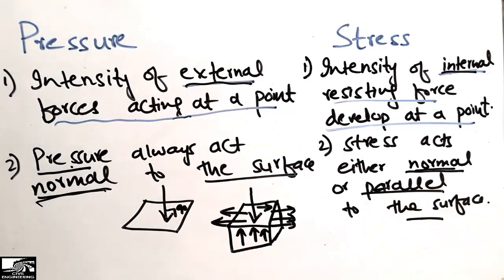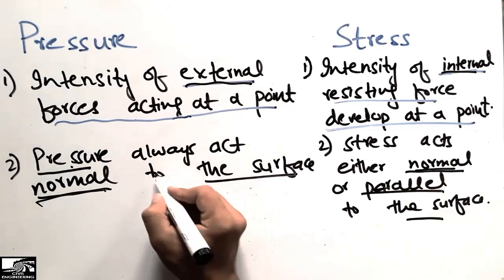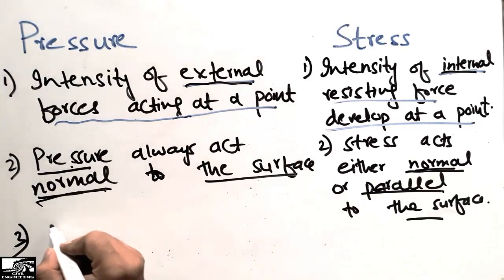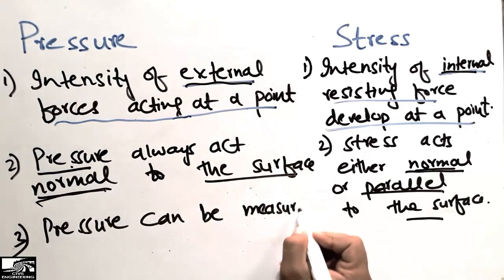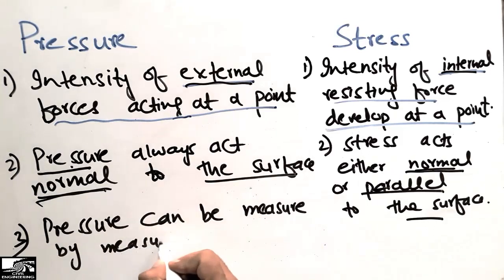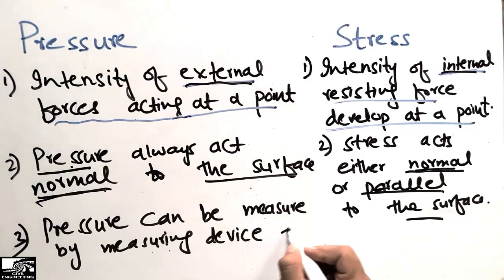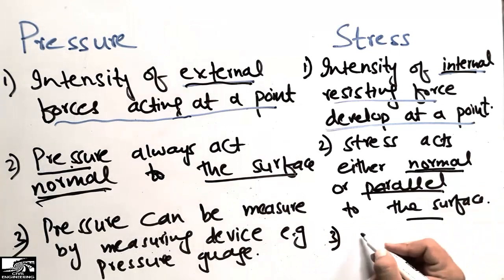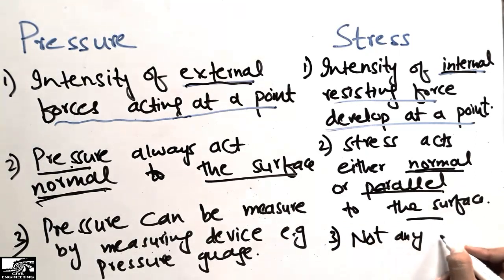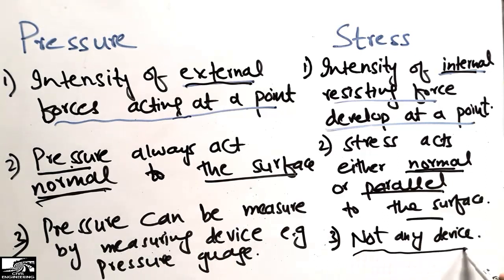The third difference is that pressure can be measured by a measuring device like a pressure gauge. However, stress cannot be measured directly by any device — there is no device to measure stress directly.